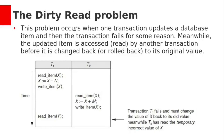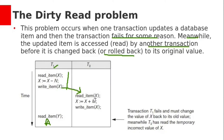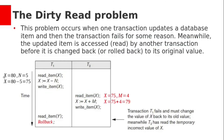The dirty read problem occurs when one transaction updates a database item and then the transaction fails for some reason. Meanwhile, that updated value is read by another transaction before it is rolled back. Suppose T1's first statement executes and X is written onto the disk, but T1 is not yet committed. Meanwhile, T2 reads this uncommitted X value. If T1 fails and is aborted, X will be rolled back. So the value used by T2 becomes invalid. This read of uncommitted data is called a dirty read.